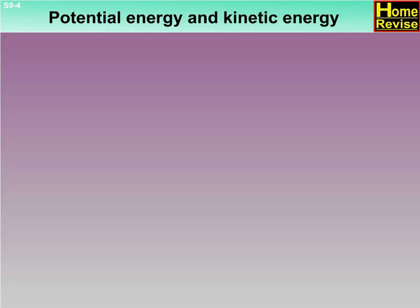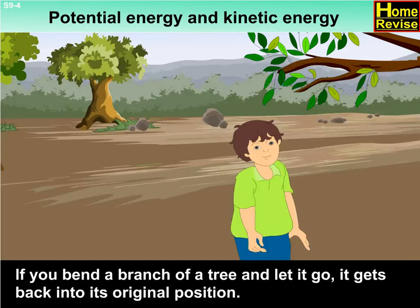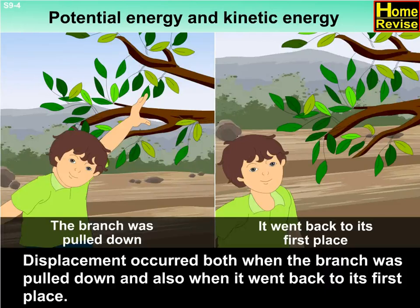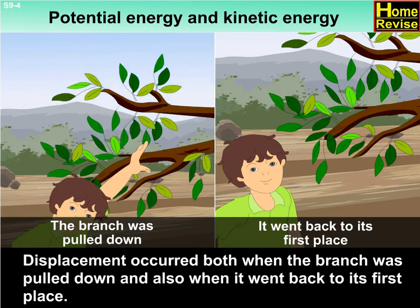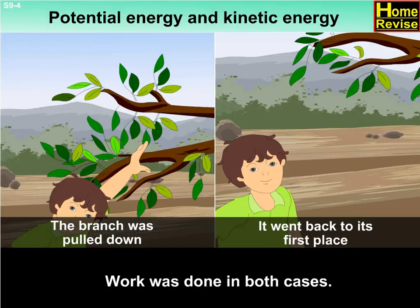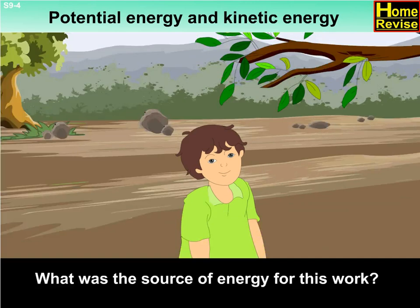Potential energy and kinetic energy. Now suppose, if you bend a branch of a tree and let it go, it gets back to its original position. Displacement occurred both when the branch was pulled down and also when it went back to its first place. Hence, work was done in both the cases. What was the source of energy for this work?